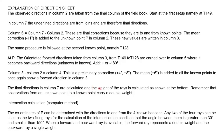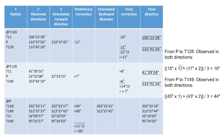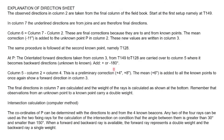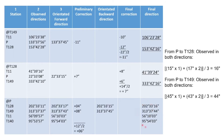You can pause on screen to see the direction sheet step by step. The key point is that the forward ray represents double weight and the backward ray is single weight — that refers to the 2 times and 1 times used in the calculation. Now we have orientated directions from P to T149, P to T11, P to T128, and P to T140.